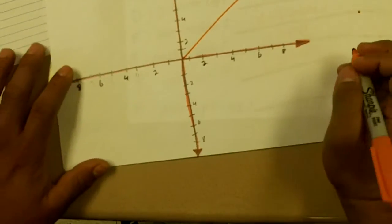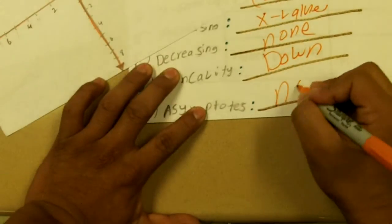For the asymptote, there's not really an asymptote so we put none for that.